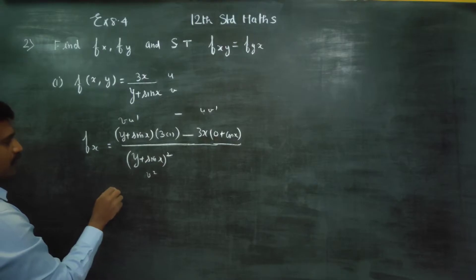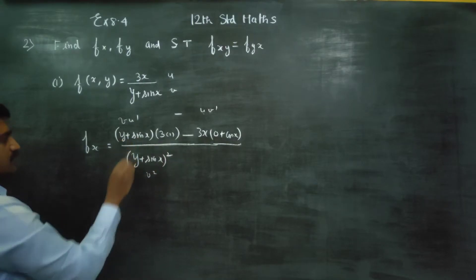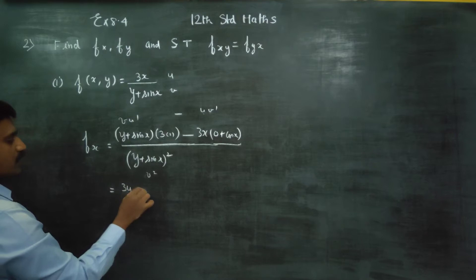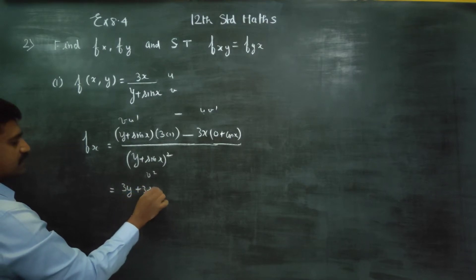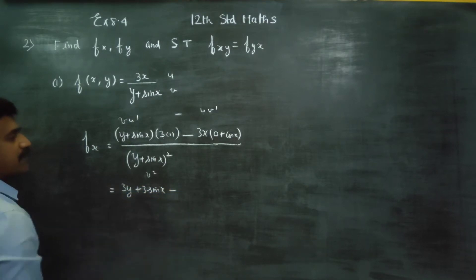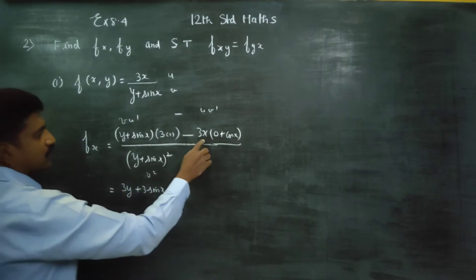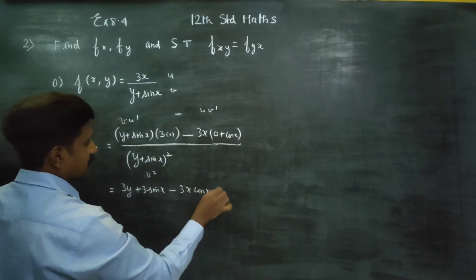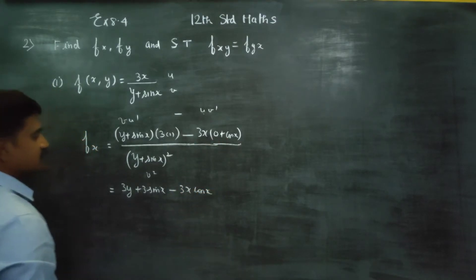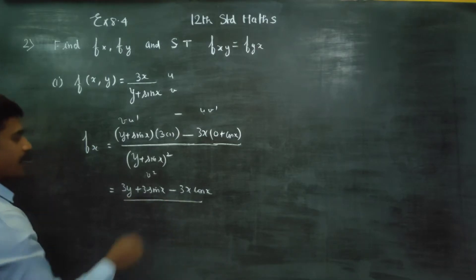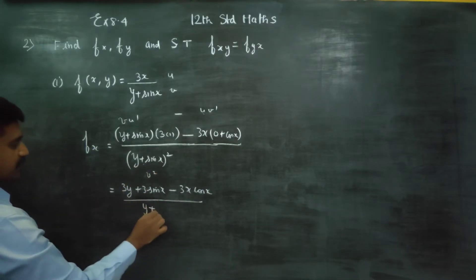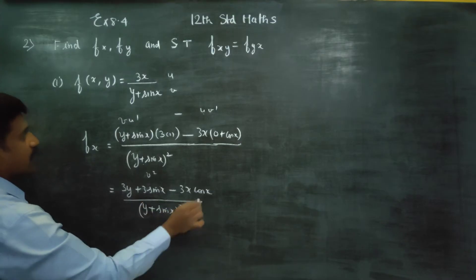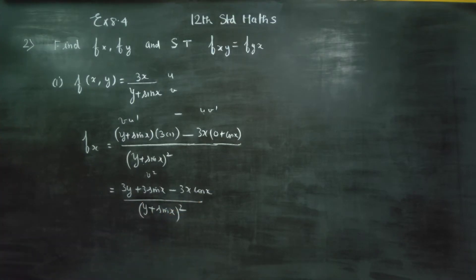Simplifying the final result: 3 into 1 is 3, so we get 3y plus sin x giving 3 sin x, minus 3x cos x, all divided by (y plus sin x) squared. This is the partial differentiation result for fx.